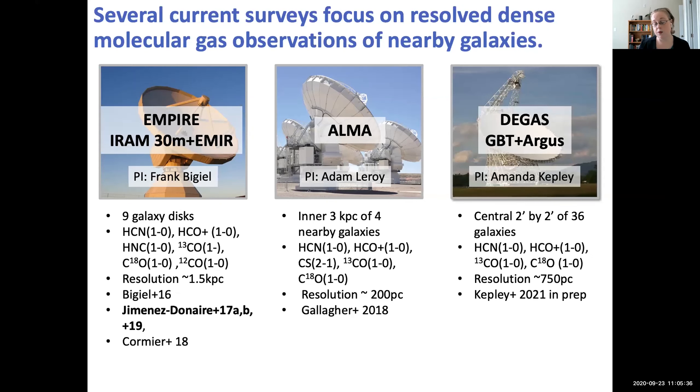And finally, the project that I'm involved with called DEGAS. This is looking at the central two by two arc minutes of 36 nearby galaxies. Our resolution is sort of intermediate between the resolution of ALMA and the resolution of EMPIRE. We're getting sub-kiloparsec resolutions around 750 parsec for our average distance.